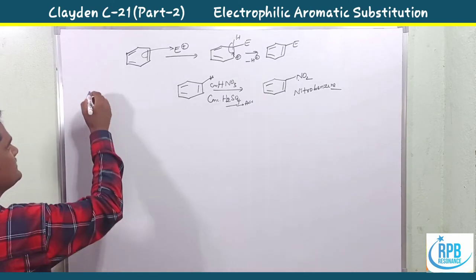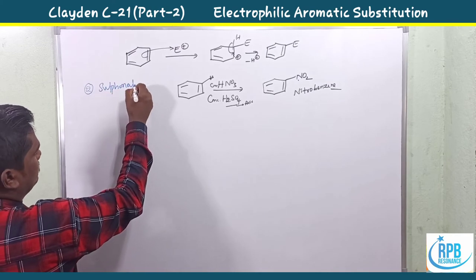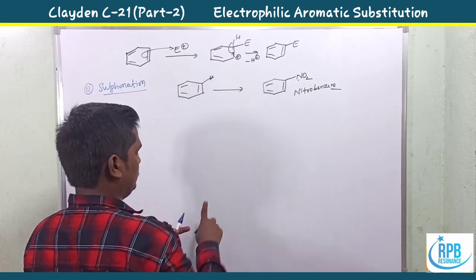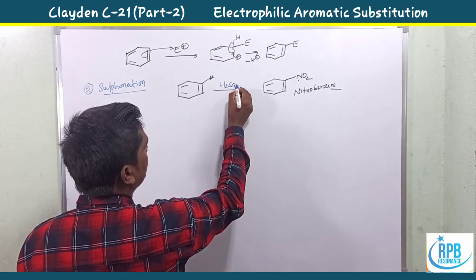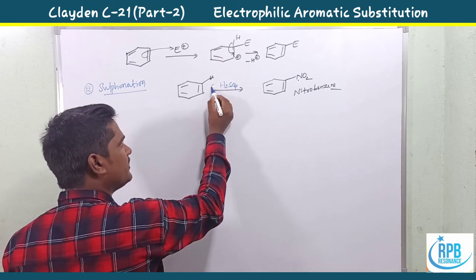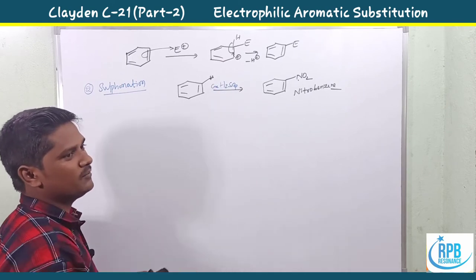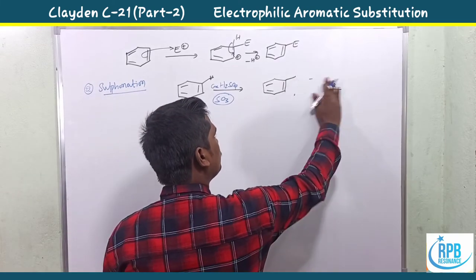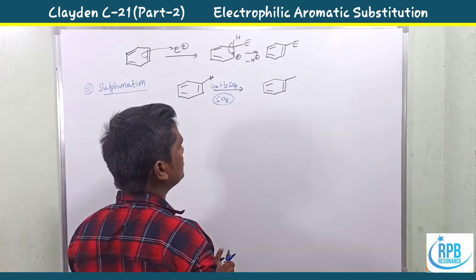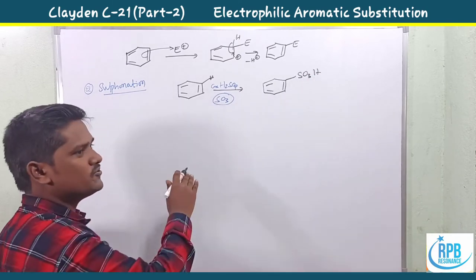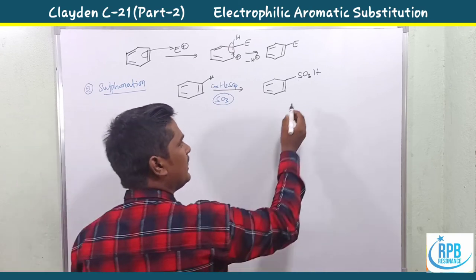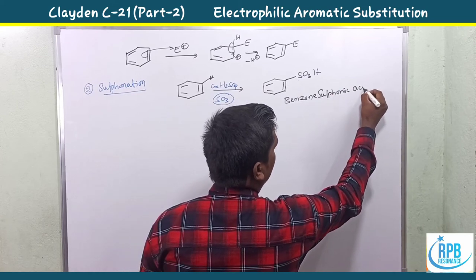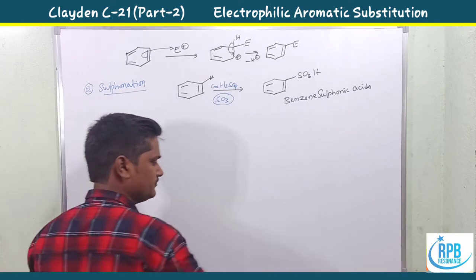The second reaction is sulfonation. Here we use only concentrated H2SO4 in pyridine solvent, or SO3 in basic medium, or SO3 alone as the electrophile. Instead of a nitro group, the sulfonyl group (SO3H) is introduced. Aromatic compounds treated with concentrated H2SO4 form aromatic sulfonic acids — for example, benzene sulfonic acid.